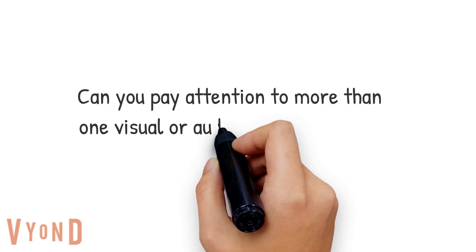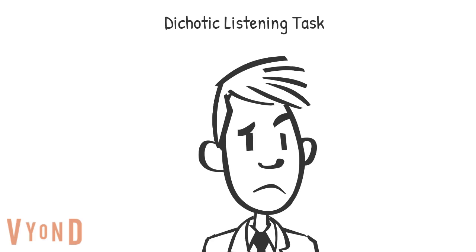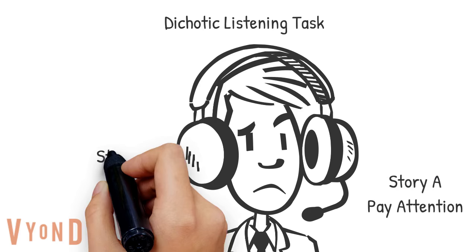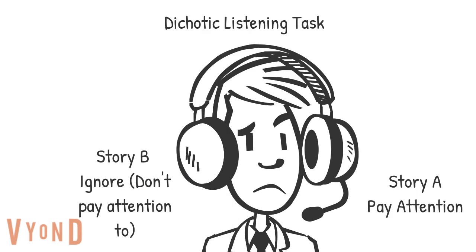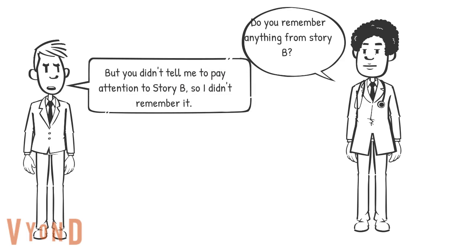People wanted to know with selective attention: can you pay attention to more than one visual or auditory task at a time? The dichotic listening task is a study where experimenters gave people headphones and played two stories in their ears at the same time, telling them to focus on story A while ignoring story B. The goal was to see if they would still pick up or remember anything from the story they did not pay attention to. The results were that most people did not remember the story in the ear they did not pay attention to, except maybe the gender of the speaker, which suggests that people may struggle to focus on more than one auditory task at a time.